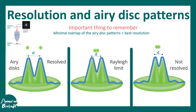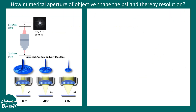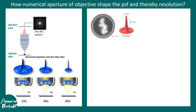If these airy patterns or point spread functions are not overlapping with each other, the resolution is best. In the first example it is highly resolved; in the second example there is some overlap but it is still within the Rayleigh limit, so it is resolved. When there is too much overlap between the airy patterns it is not resolved at all. There is a clear relationship between numerical aperture, the airy patterns, and the resolving power of the microscope — increasing the numerical aperture makes images more resolved.